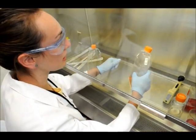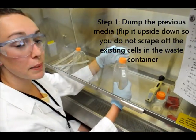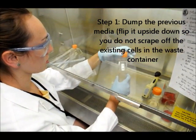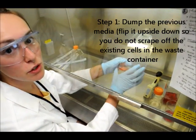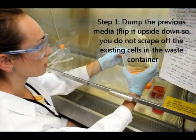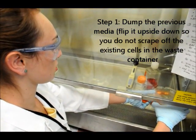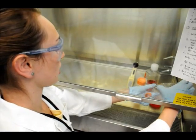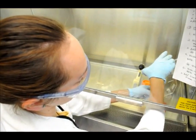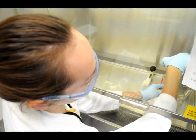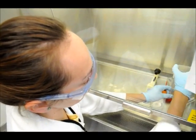First you're going to take the media, the cells that you're going to split, and you're going to dump out all the media in it. Make sure you do it with the actual cells at the top so you don't get rid of any of the cells. Dump it out carefully and make sure you get it all out from the sides.